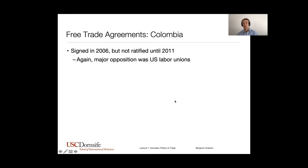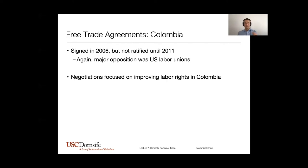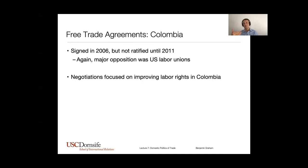There was also a bilateral free trade agreement negotiated with Colombia, following the same kind of pattern where the Bush administration had originally negotiated it, the Senate rejected it, and then the Obama administration came back and renegotiated. This time, rather than getting the U.S. early access to the Colombian market, the negotiators focused on improving labor rights in Colombia. Some of the complaint from U.S. labor unions was that imported products from Colombia were lower priced not necessarily because Colombian manufacturers were more efficient, but because they were repressing the labor rights of Colombian workers, keeping prices artificially low.